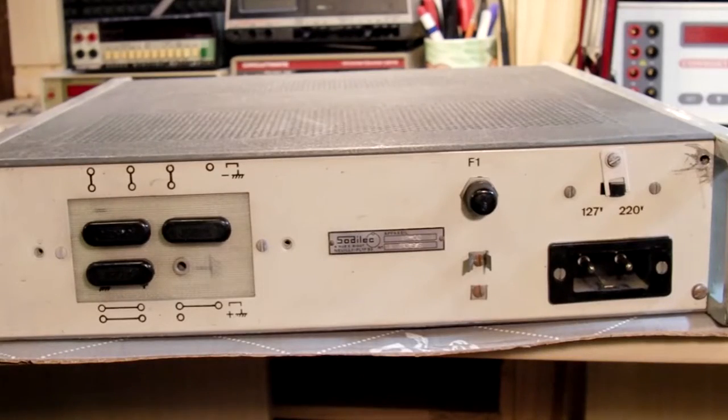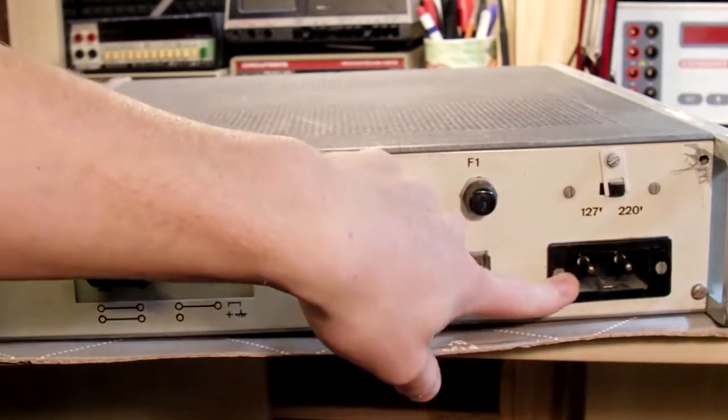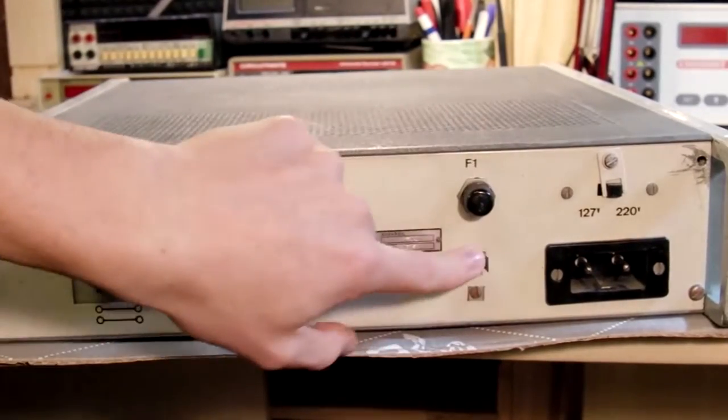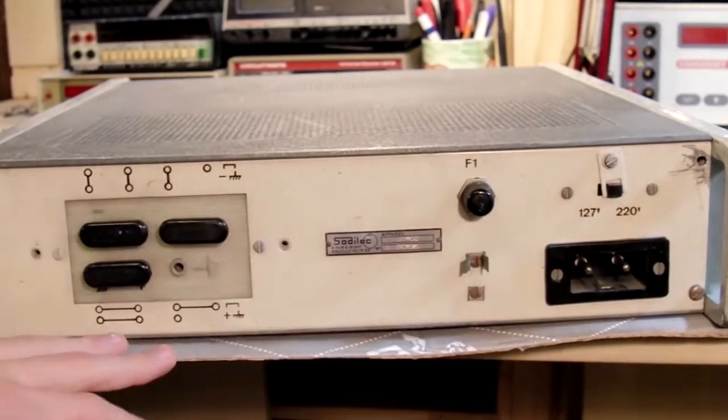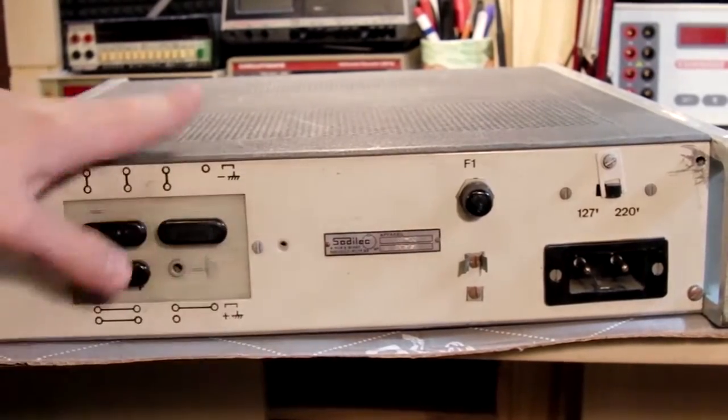On the back the usual stuff, your voltage selection here, your mains plug, fuse, fuse holder that appears to be broken. A little brand here, it's a Solartec.